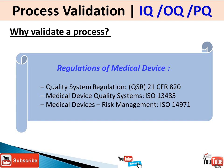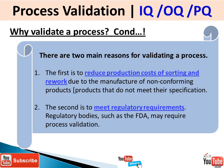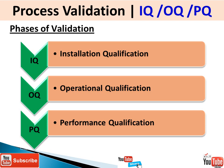So why do we need to validate a process? There are regulations and guidelines for medical devices requiring process validation, including 21 CFR Part 820 — the Quality System Regulation — and ISO 13485, as well as risk management standards. The two main reasons are: first, to reduce production costs associated with sorting and reworking, which ultimately saves money; and second, to meet the regulatory guidelines of bodies such as the FDA.